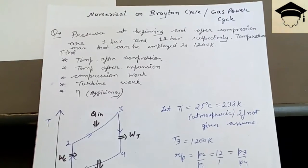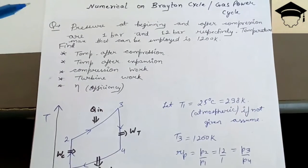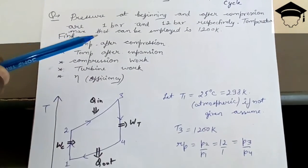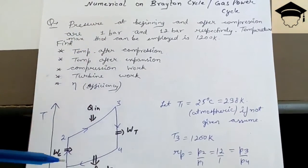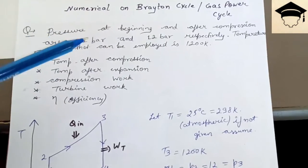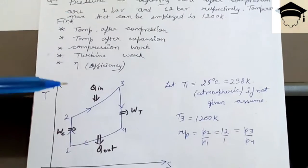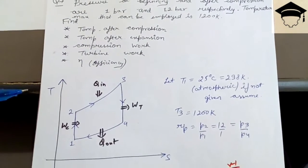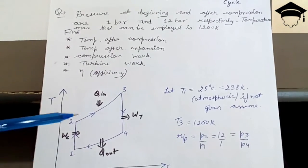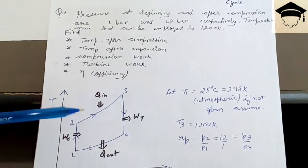If you have any doubt or suggestion, please mention in the comment section below. Now, a typical Brayton cycle problem: they will give you the maximum and minimum pressure. Here, the pressure before compression is 1 bar and after compression it is 12 bar. The maximum temperature of the cycle is 1200 Kelvin. The TS diagram of the Brayton cycle goes from 1→2→3→4: 1 to 2 is isentropic compression, 2 to 3 is constant pressure heat addition, 3 to 4 is isentropic expansion, and 4 to 1 is constant pressure heat rejection.